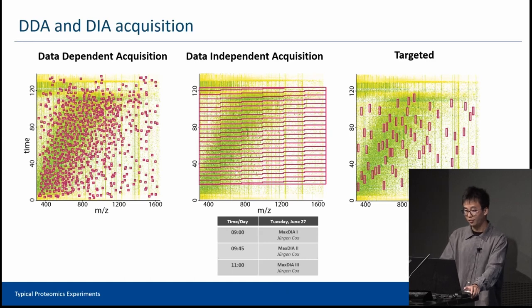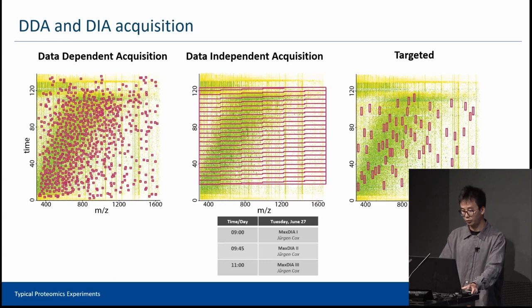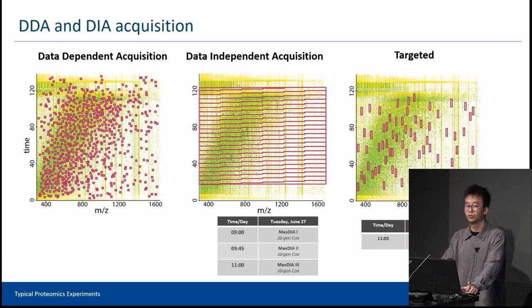There is another strategy I haven't introduced: targeted analysis. Basically, for some researchers, they're very especially interested in certain proteins—for example, some proteins or enzymes from certain disease pathways. In this case, they just target and set special M over Z parameters for these proteins. For targeted analysis, we also have a slot on Wednesday. Christoph will give a presentation to introduce MaxQuant Live and how we use this for targeted analysis.